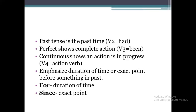Let's look at the verb forms as well. With past tense, we always have the second form of the verb, and in this tense we have 'had.' With perfect, we always have the third form of the verb, which here is 'been.' And with continuous, we always have the fourth form of the verb — that is, base form plus '-ing.' So we will have all three forms in the structure of Past Perfect Continuous sentences.